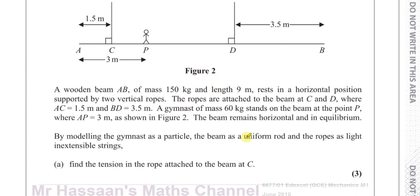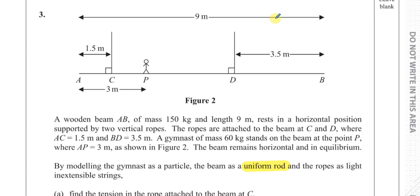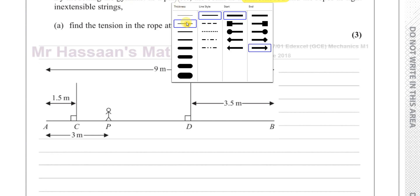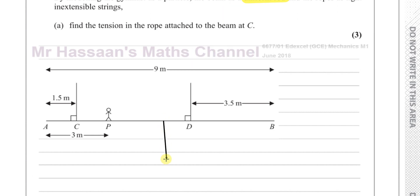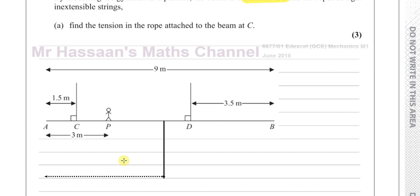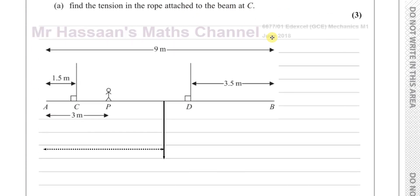An important point here is the fact they've called this a uniform rod. A uniform object is one where the centre of mass is right in the geometric centre of the beam. So this is 9 metres long, so exactly 4.5 metres in from either end is where the weight of the beam will act. The mass of the beam is 150 kilograms, so the weight is 150g newtons acting at 4.5 metres from the end.